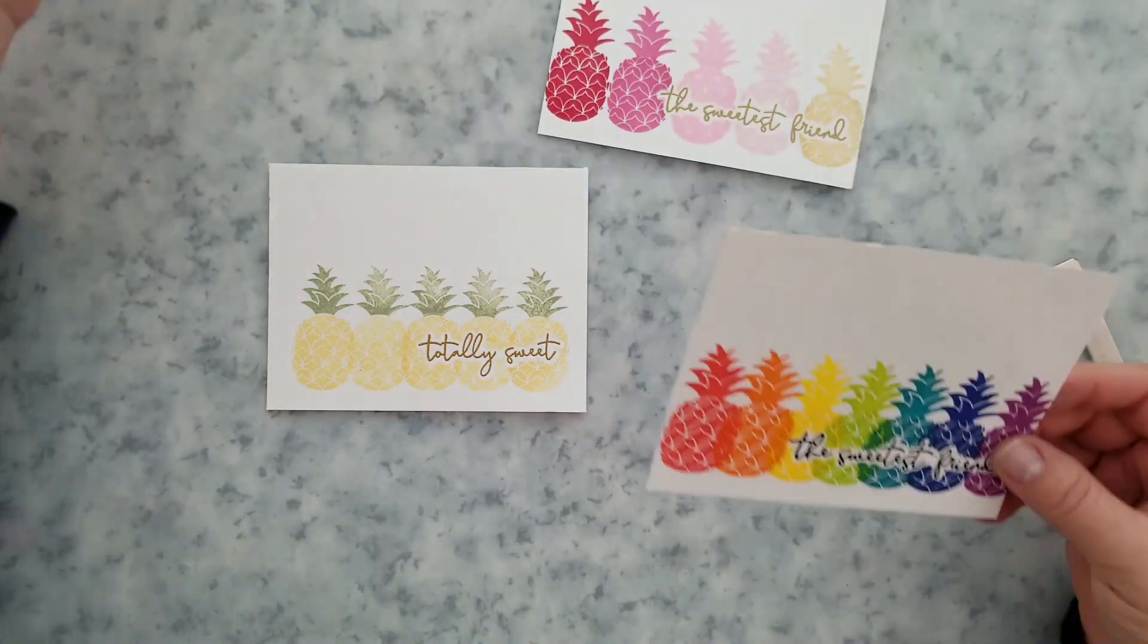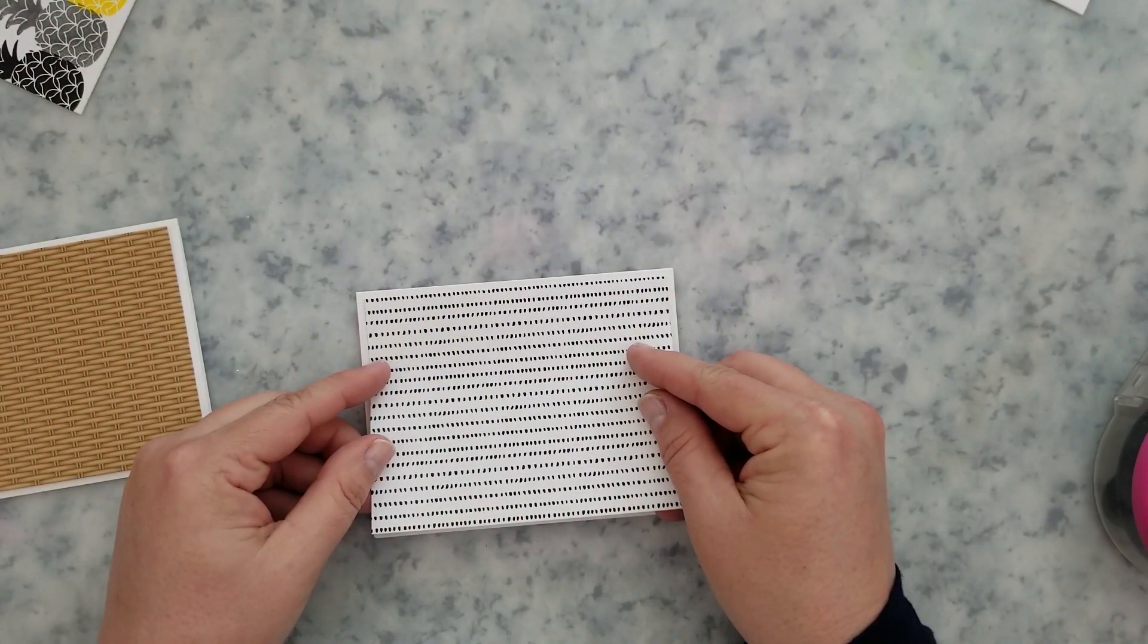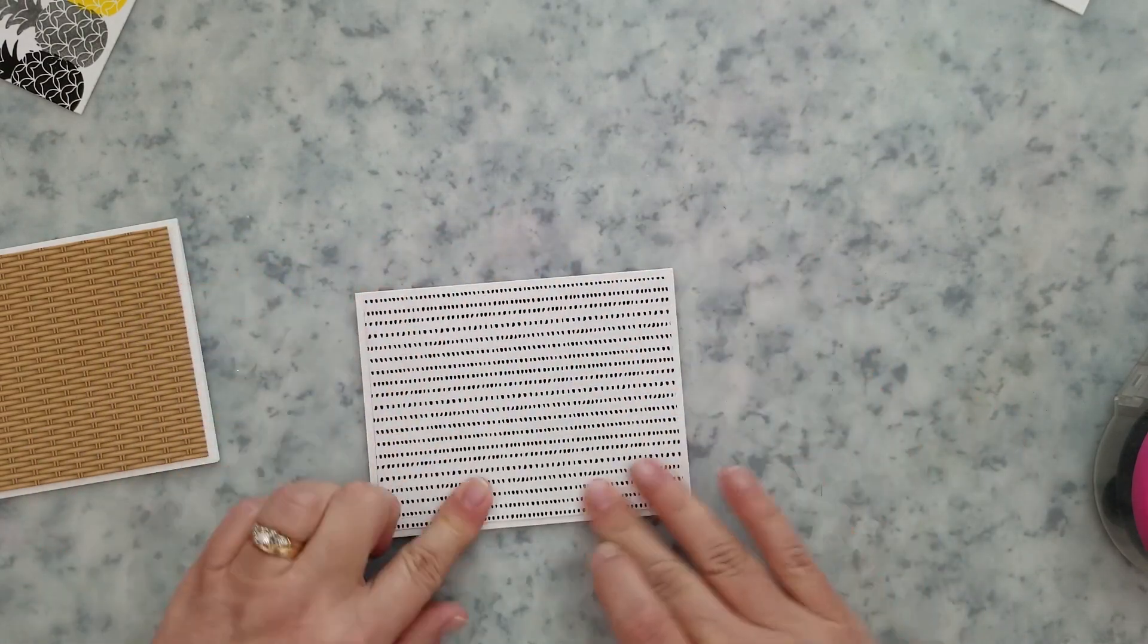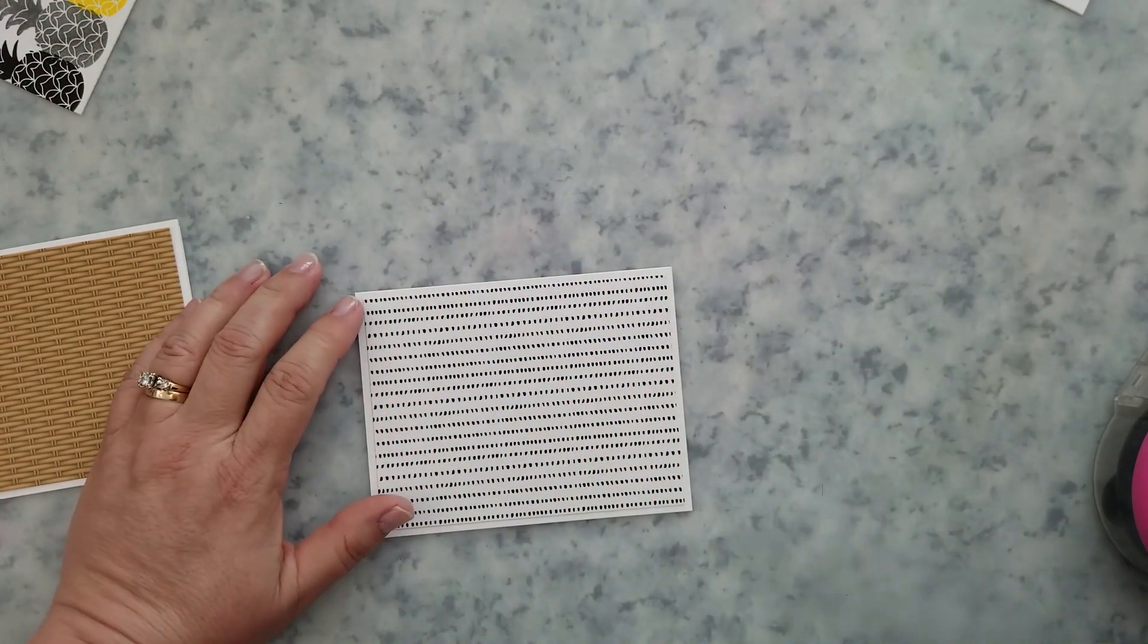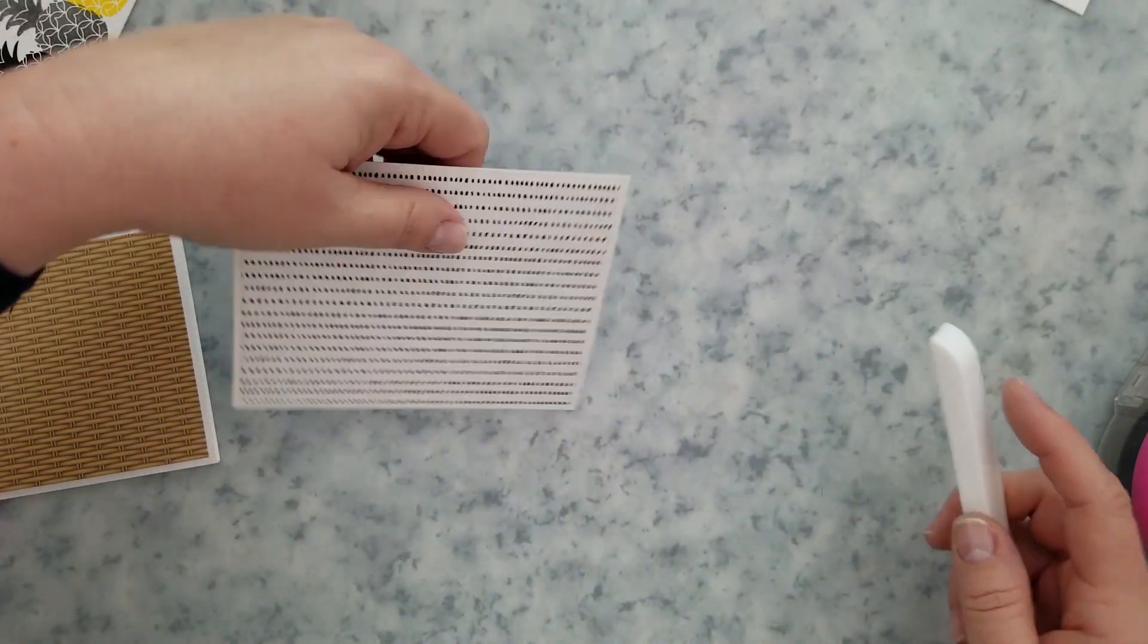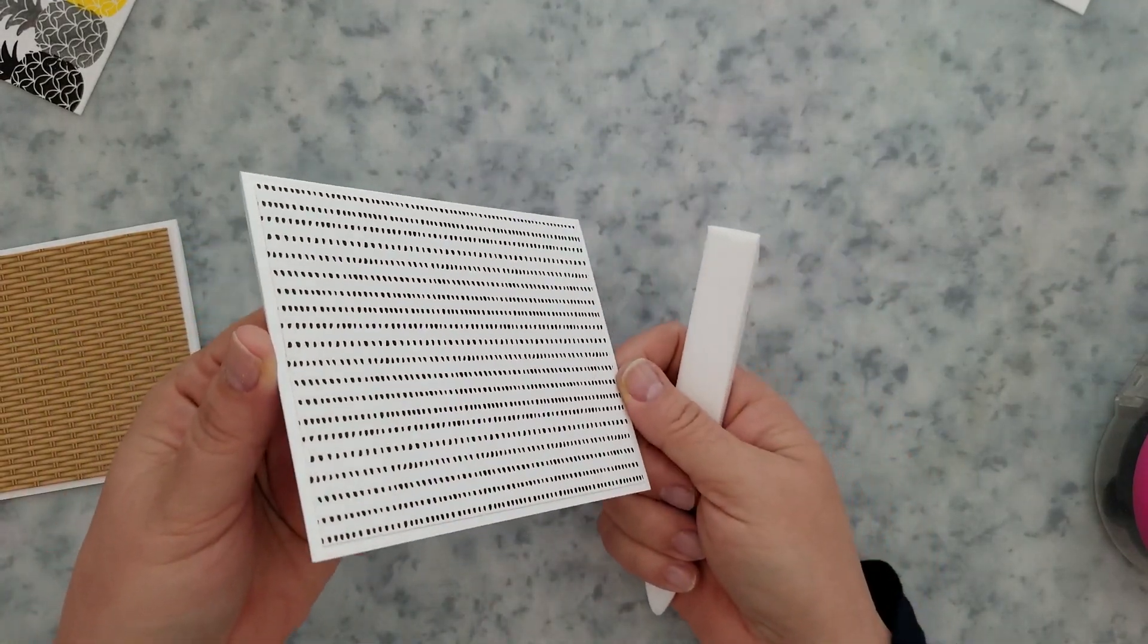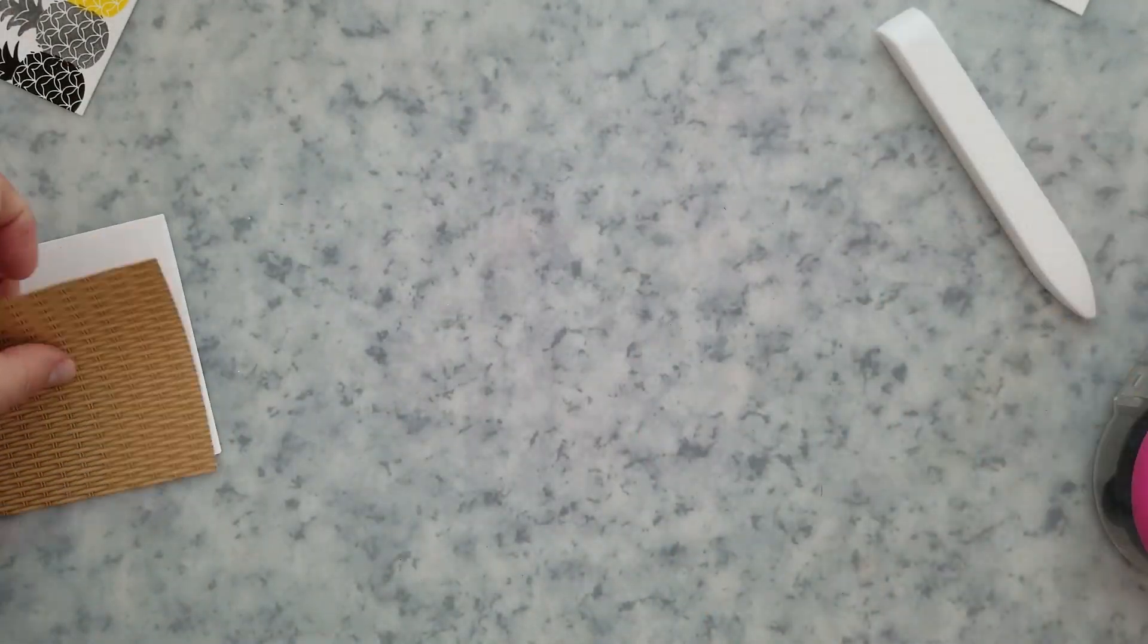Okay, so now that we have our panel stamped, I just trim them down so that I can go ahead and get those on a card. Two of the cards I'm actually going to be using some pattern paper with them, so I've used pattern paper from the Back to Basics paper pad and also the new Beach Vibes paper pad from Honeybee, and I'm just centering those.